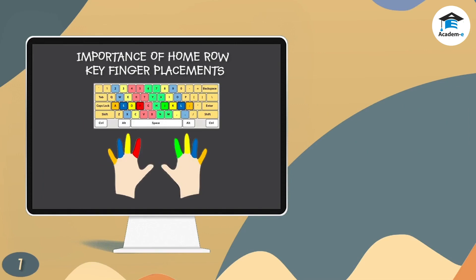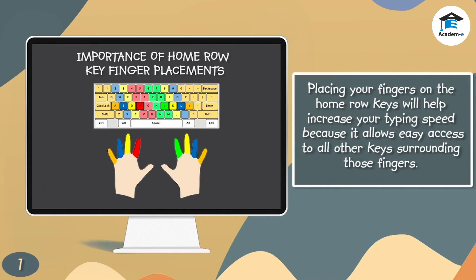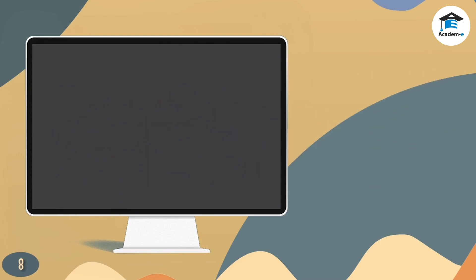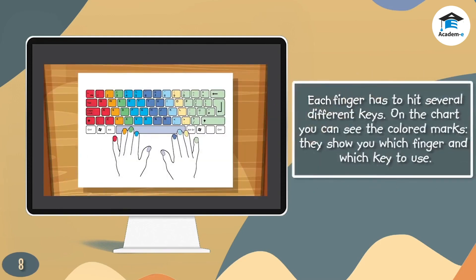Placing your fingers on the home row keys will help increase your typing speed because it allows easy access to all other keys surrounding those fingers. Faster typing relies on each finger pressing specific keys that are nearby without having to move your whole hand or other fingers, and ideally without looking at the keyboard. Each finger has to hit several different keys. On the chart you can see the colored marks—they show you which finger and which key to use.